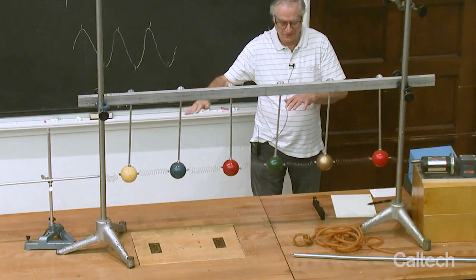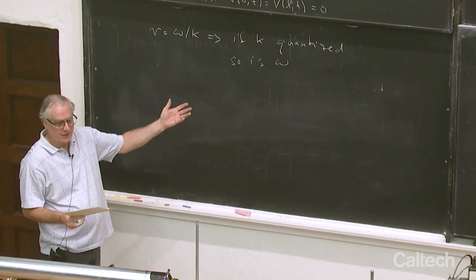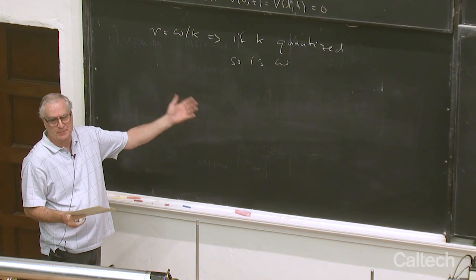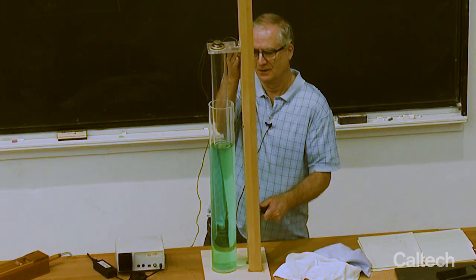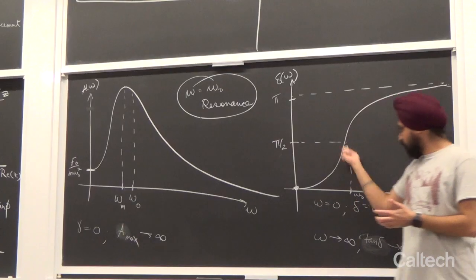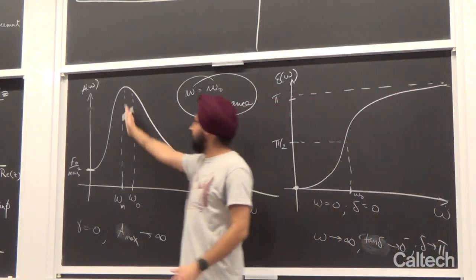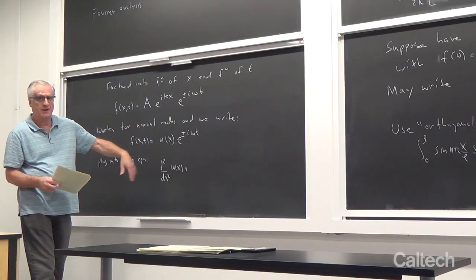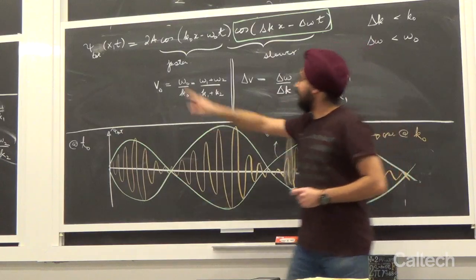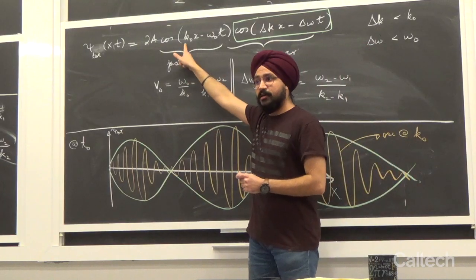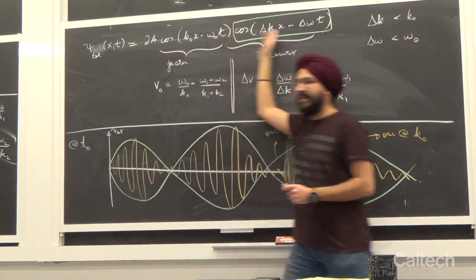This course on vibrations and waves was taught at Caltech in the fall of 2019 and is targeted at Caltech sophomores and juniors who are not majoring in physics. Since a large fraction of the students who took this course are in engineering disciplines, the subject matter is relevant to most and it goes deeper than merely breadth.